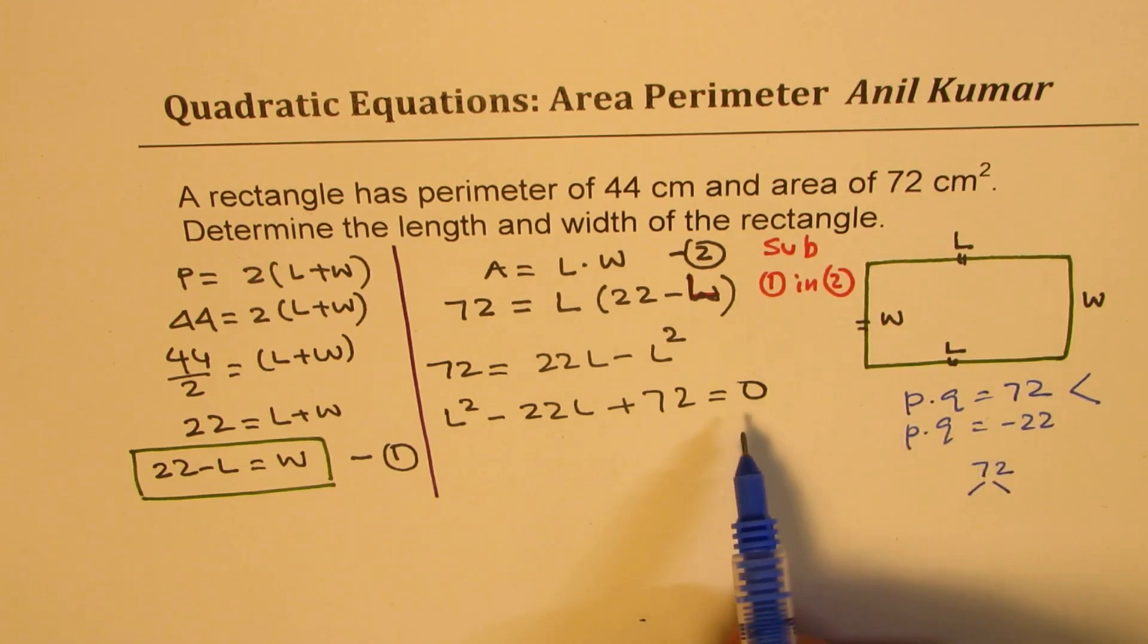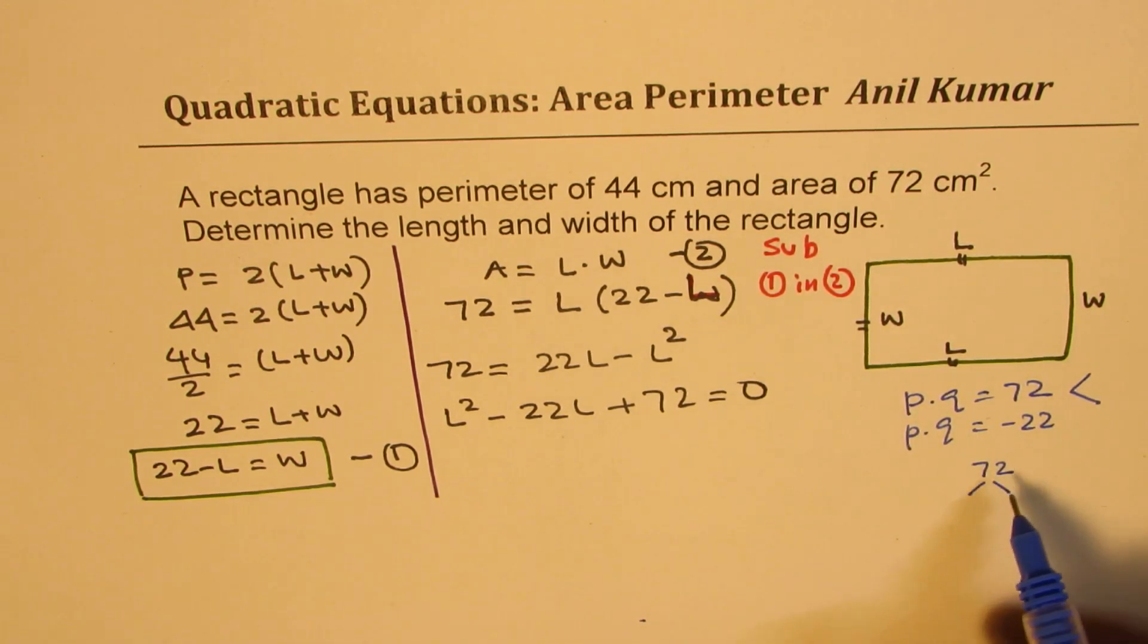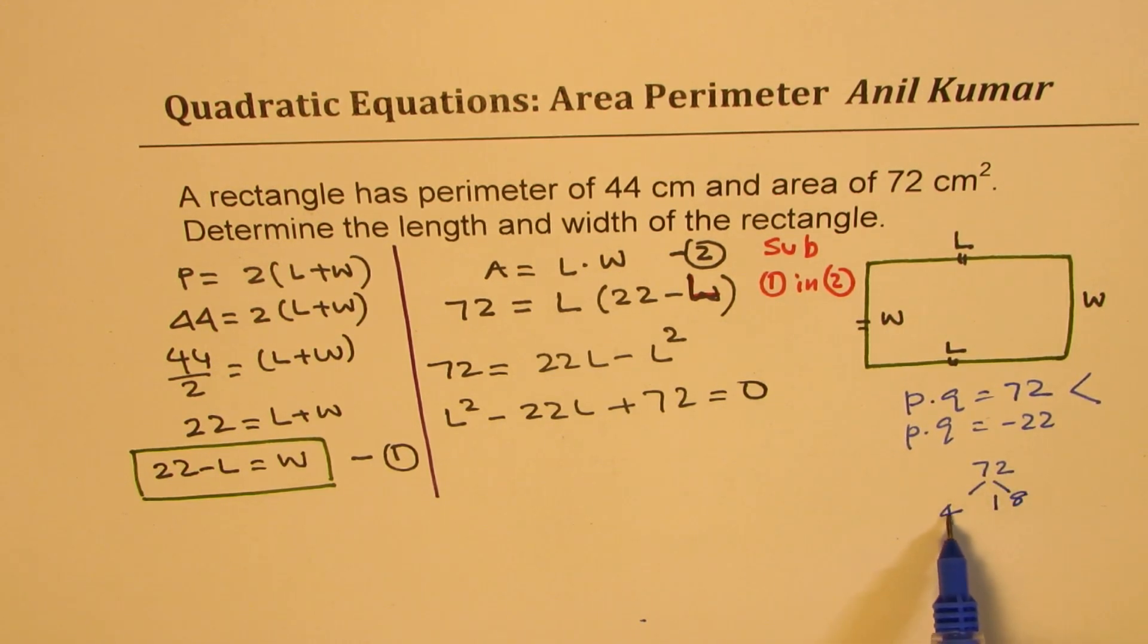So if you factor 72, we could say, well, if I divide by 4, I get 4 times 18. And you see when you add these two, you do get 22, correct? Now since we need negative, both should be negative. Does that make sense to you?